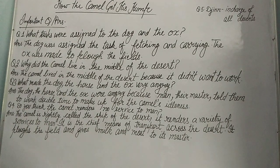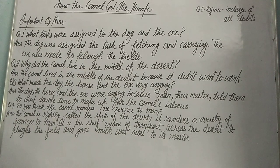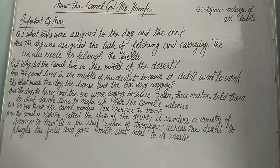Morning students, today we will discuss question-answers of the chapter 'How the Camel Got His Hump'. First question is: what tasks were assigned to the dog and the ox? Task means work, assigned means soṅpe gae the — yani dog aur ox ko kya kaam soṅpe gae the.